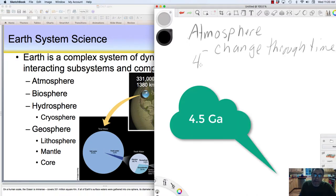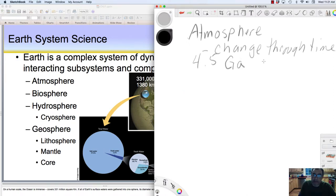About 4.5 billion years ago—whenever you see this Ga, it means billion because it really means giga, and giga is 1 times 10 to the 9, which is a billion years.